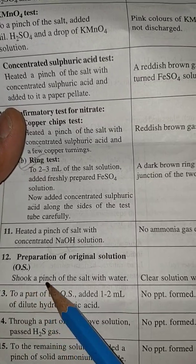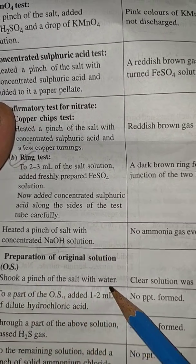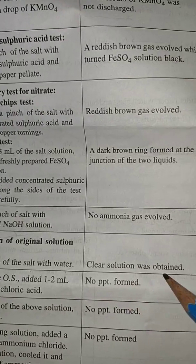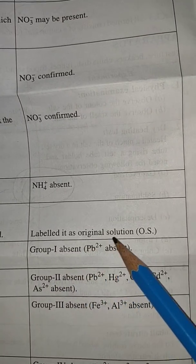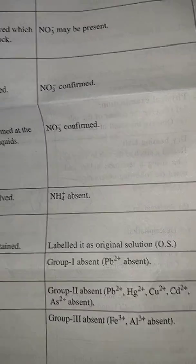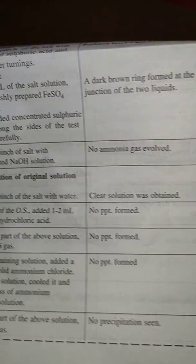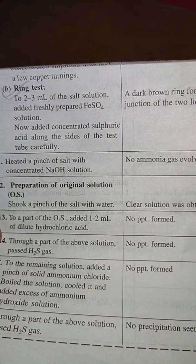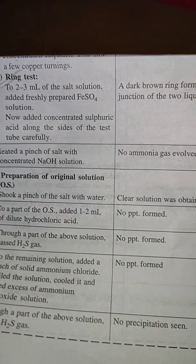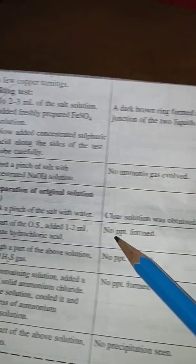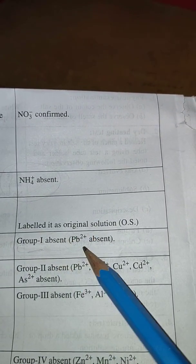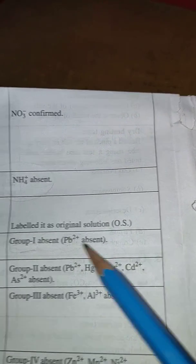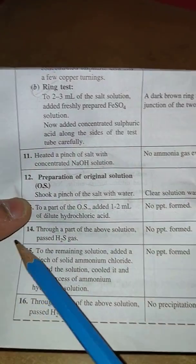Preparation of the original solution: soak a pinch of the salt with water. Clear solution was obtained, label it as original solution OS. To a part of the original solution add one to two ml of dilute hydrochloric acid. No precipitate formed, that means group one, that is Pb²⁺, is absent.